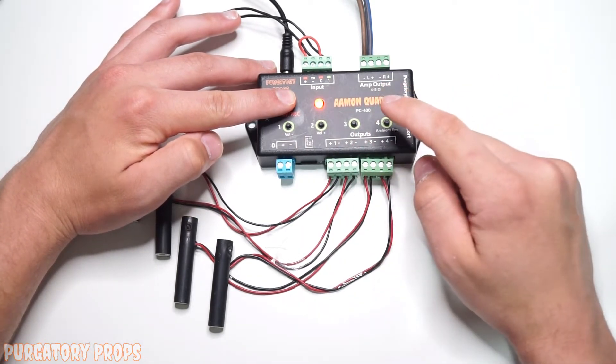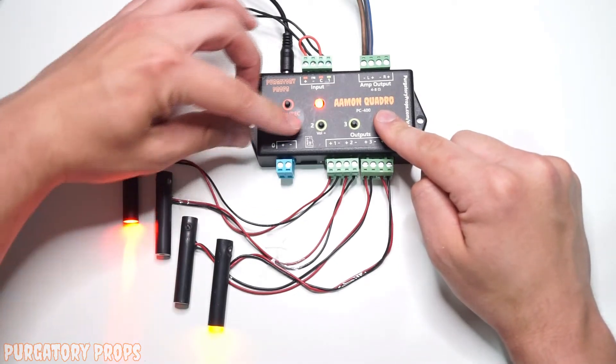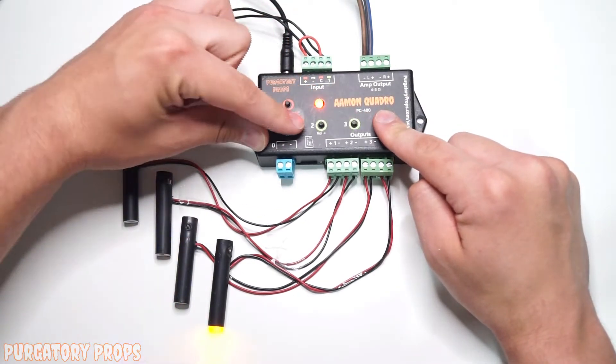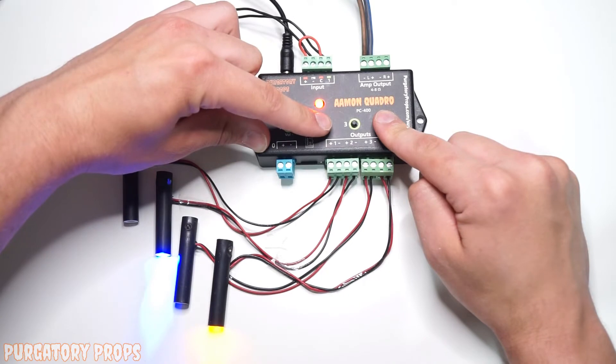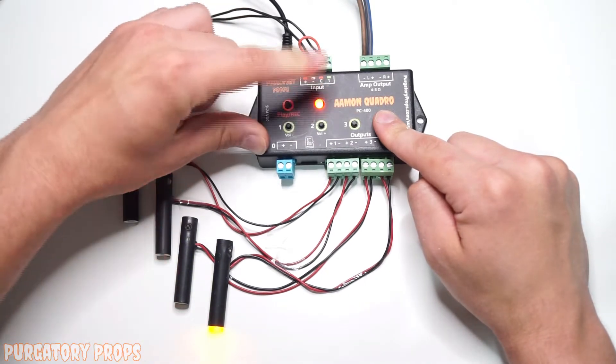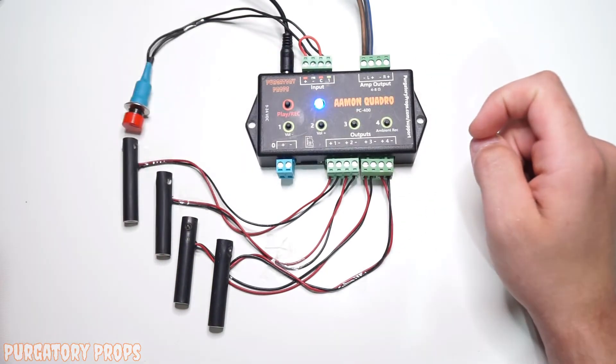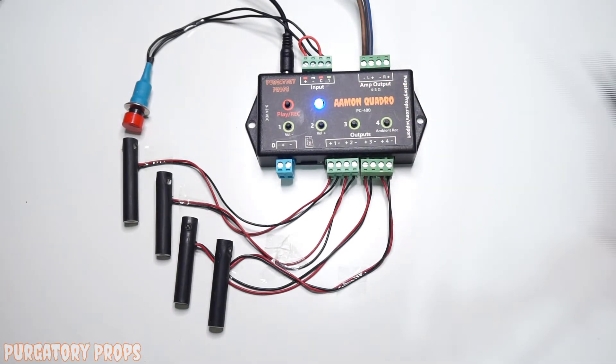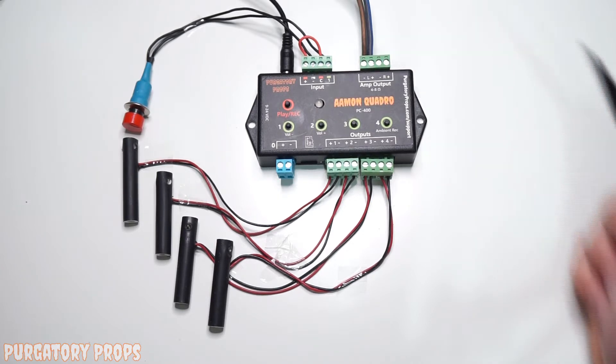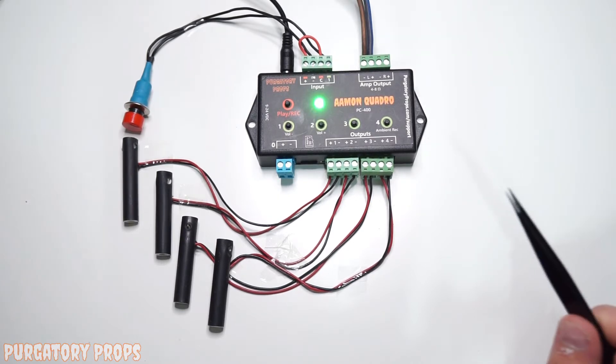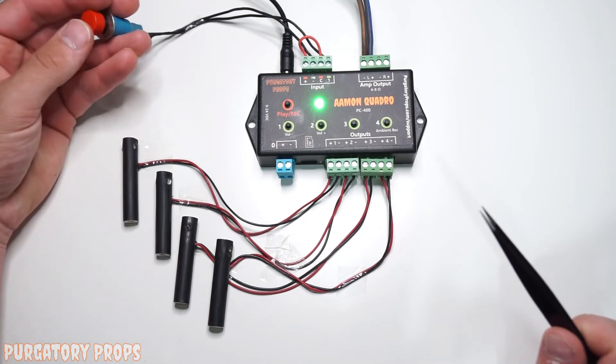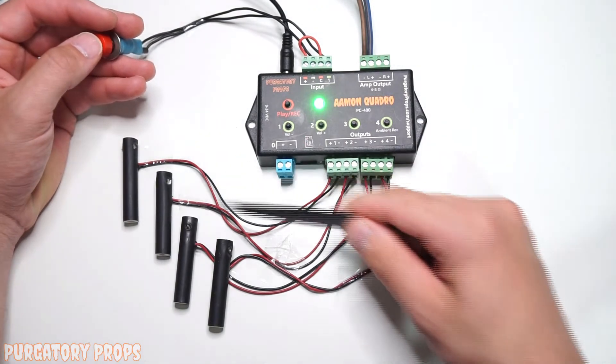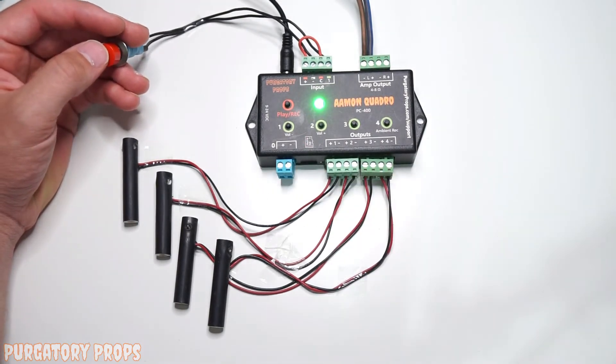So if we go ahead and release, and then press play record again to stop recording. This blue LED means it's saving. This could take a little bit depending on how long your animation is. When you get the green LED again, it is done saving, and now if we trigger, you'll hear the sound again and see the outputs play exactly as we recorded them.